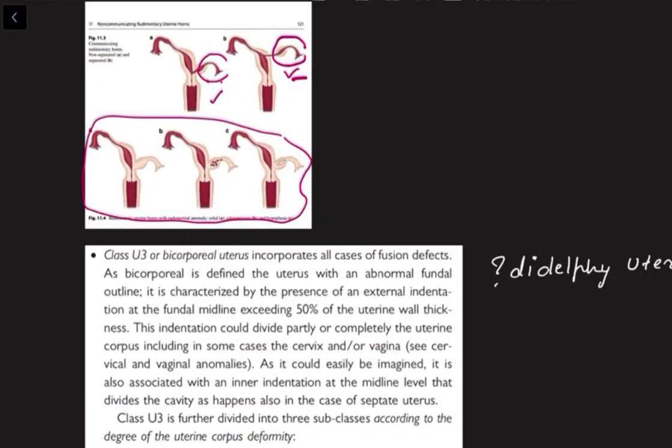With this we conclude this comprehensive topic. The classification of Müllerian duct anomalies is now covered, and you can use this knowledge to categorize uterine anomalies. Thank you.